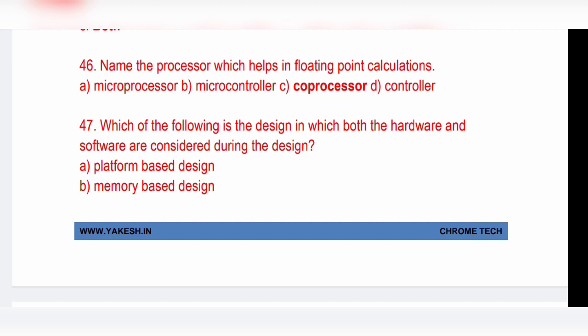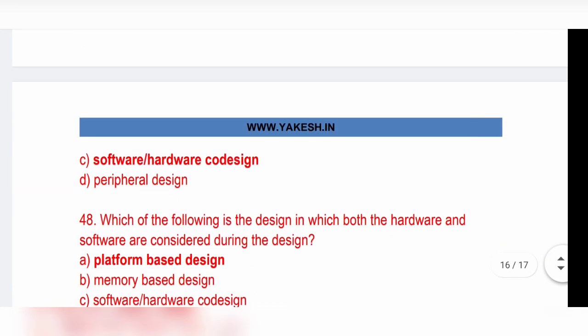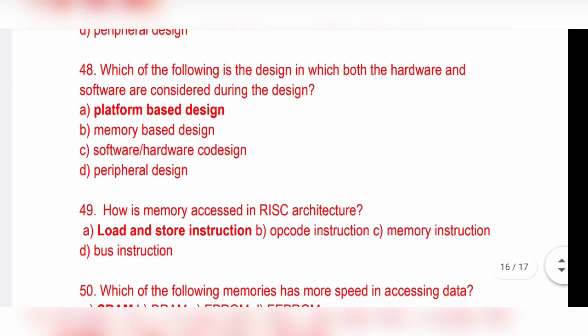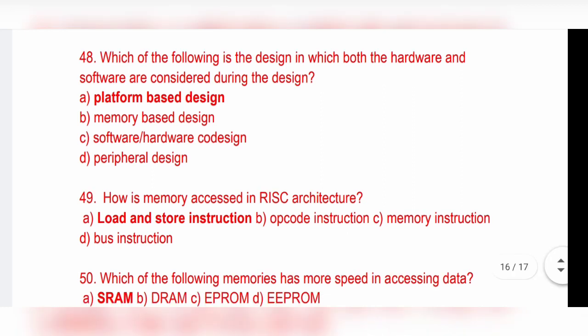Name the processor which helps in floating point calculation. Option C, coprocessor. Which of the following is design in which both hardware and software are considered during the design? Option C, software hardware co-design. Platform based design, option A is the correct answer. How is memory accessed in RISC architecture? Option A, load and store instruction is the correct answer.